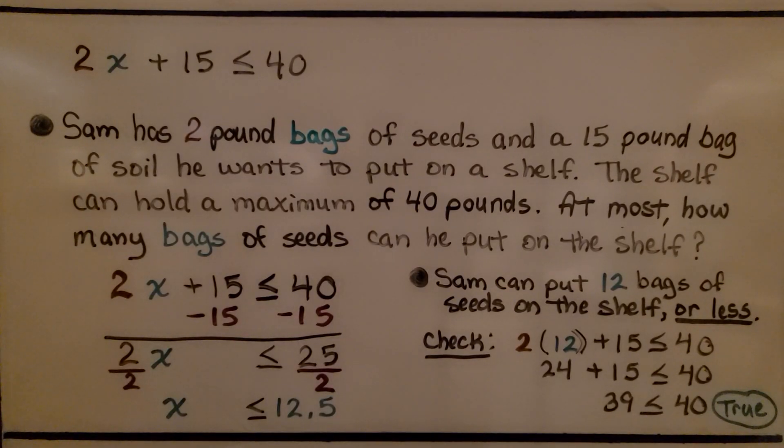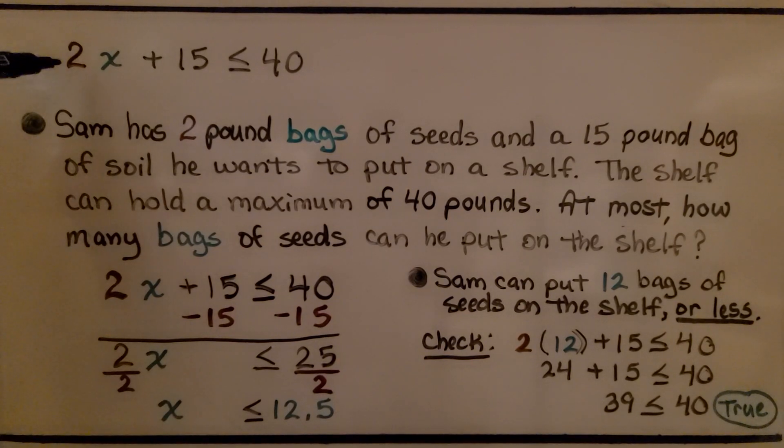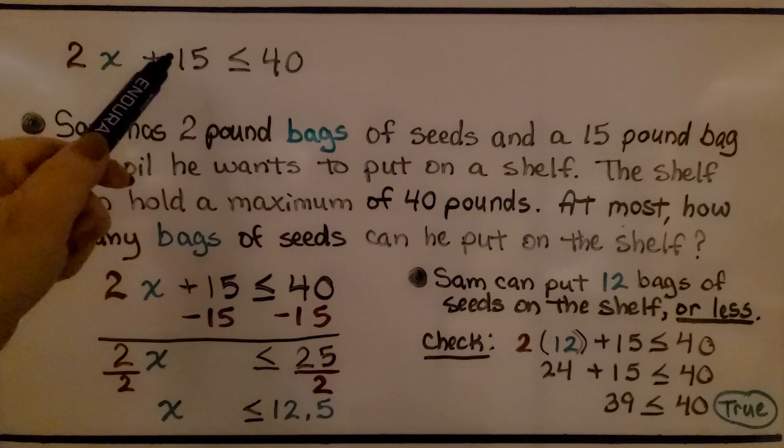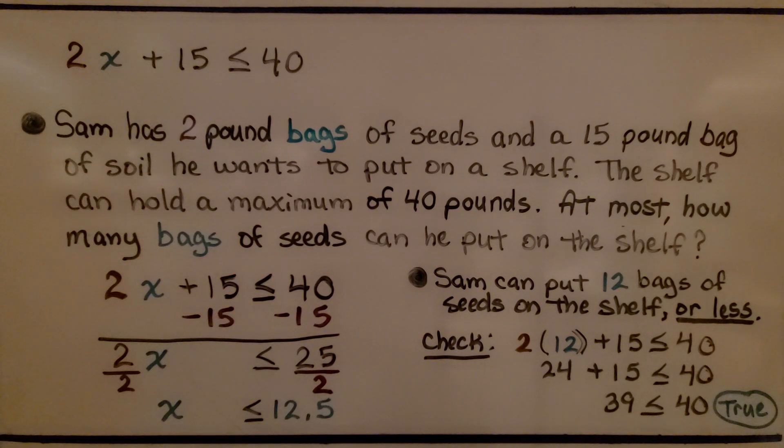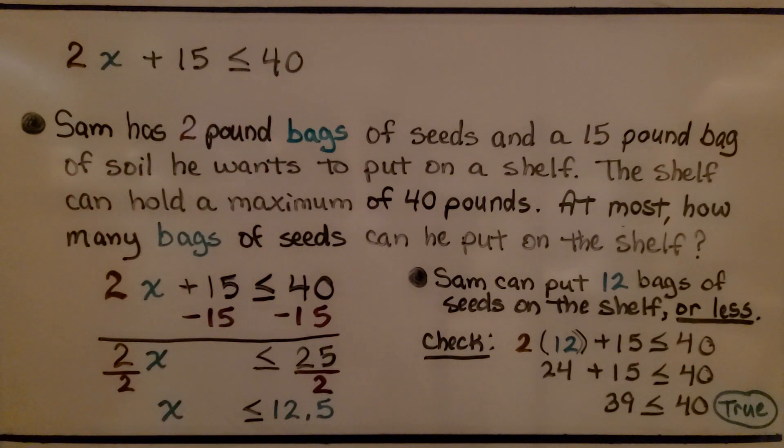This same inequality could be the verbal description. Sam has 2 pound bags of seeds and a 15 pound bag of soil he wants to put on a shelf. The shelf can hold a maximum of 40 pounds. At most, how many bags of seeds can he put on the shelf?